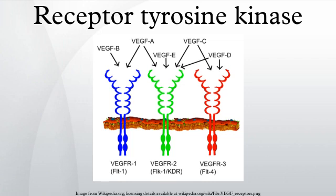The ERBB protein family, or epidermal growth factor receptor family, is a family of four structurally related receptor tyrosine kinases. Insufficient ERBB signaling in humans is associated with the development of neurodegenerative diseases such as multiple sclerosis and Alzheimer's disease. In mice, loss of signaling by any member of the ERBB family results in embryonic lethality with defects in organs including the lungs, skin, heart, and brain. Excessive ERBB signaling is associated with the development of a wide variety of solid tumors. ERBB1 and ERBB2 are found in many human cancers and their excessive signaling may be critical factors in the development and malignancy of these tumors.